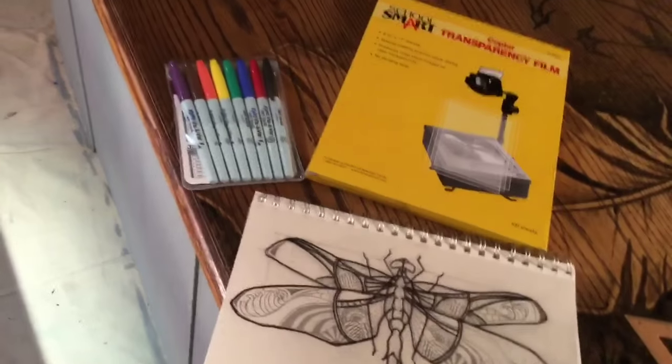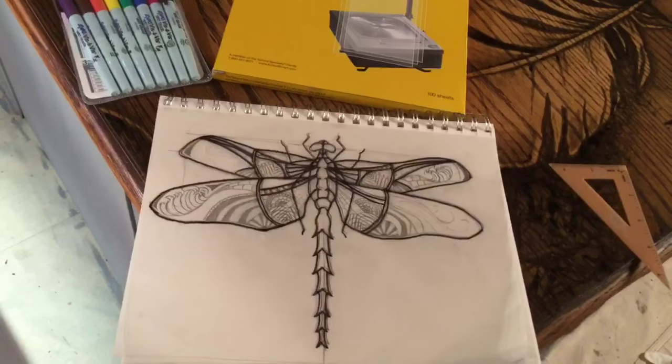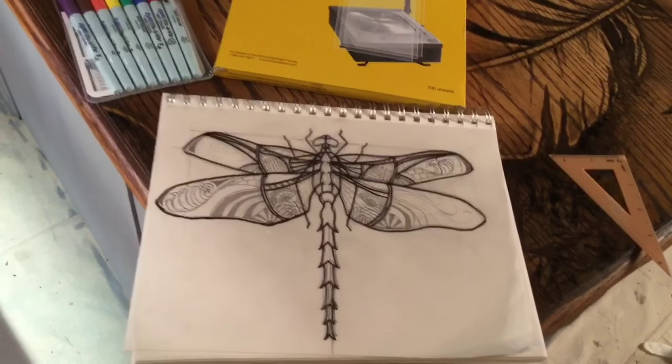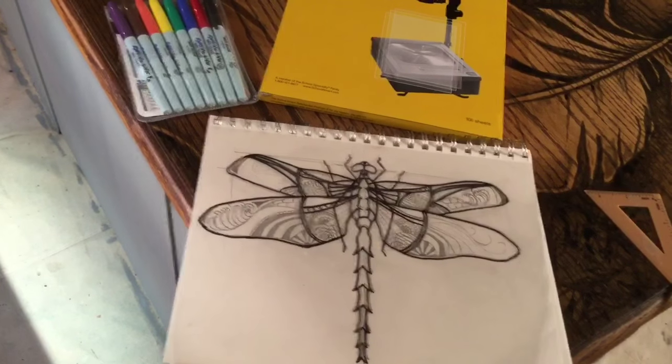I will say the Expo markers kind of have a fat line so you can only get so much detail onto the transparency film which means you're going to have to freehand a lot of it on the actual wood itself which I'll show you how to still get a symmetrical look by freehanding.